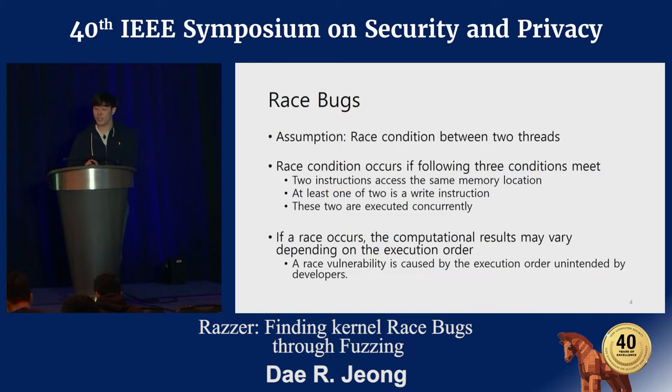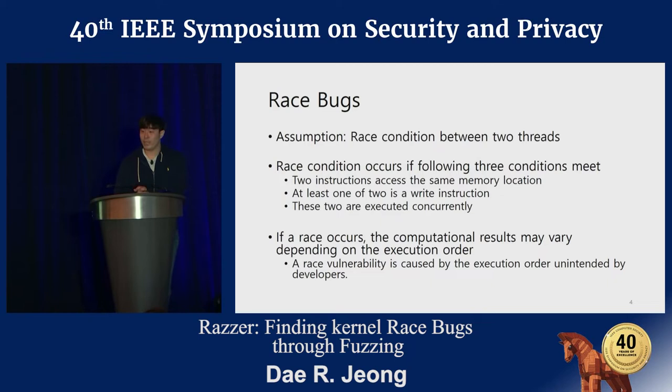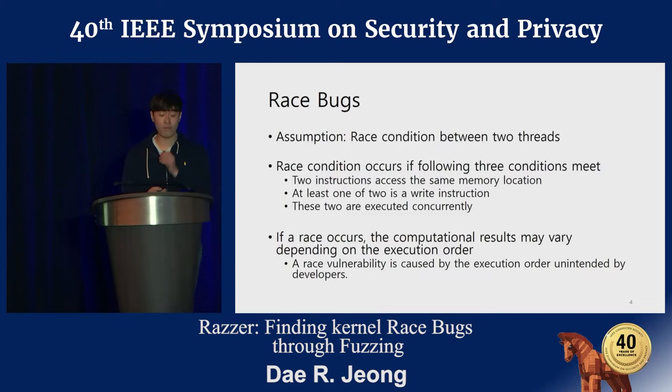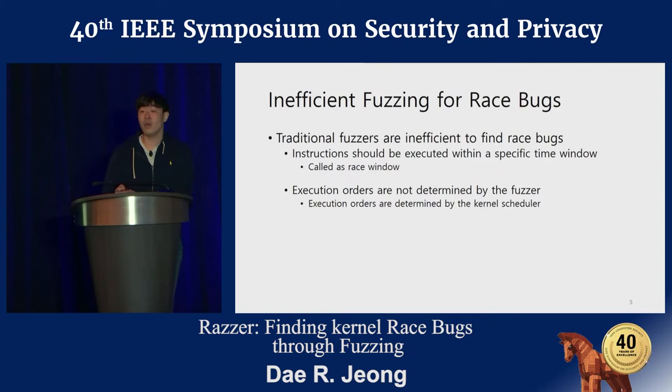The important point is that if a race occurs, then the computational results may vary depending on the execution order of instructions. It is very hard for developers to think about all possible execution orders. Therefore, developers may fail to avoid race conditions, or they mis-handle the consequence of the race condition. Therefore, a race vulnerability is caused by the execution order which is unintended by developers. So, especially for race bugs, how would fuzzing work? Would it be efficient, similar to how fuzzing discovers non-race bugs, or would it be inefficient?